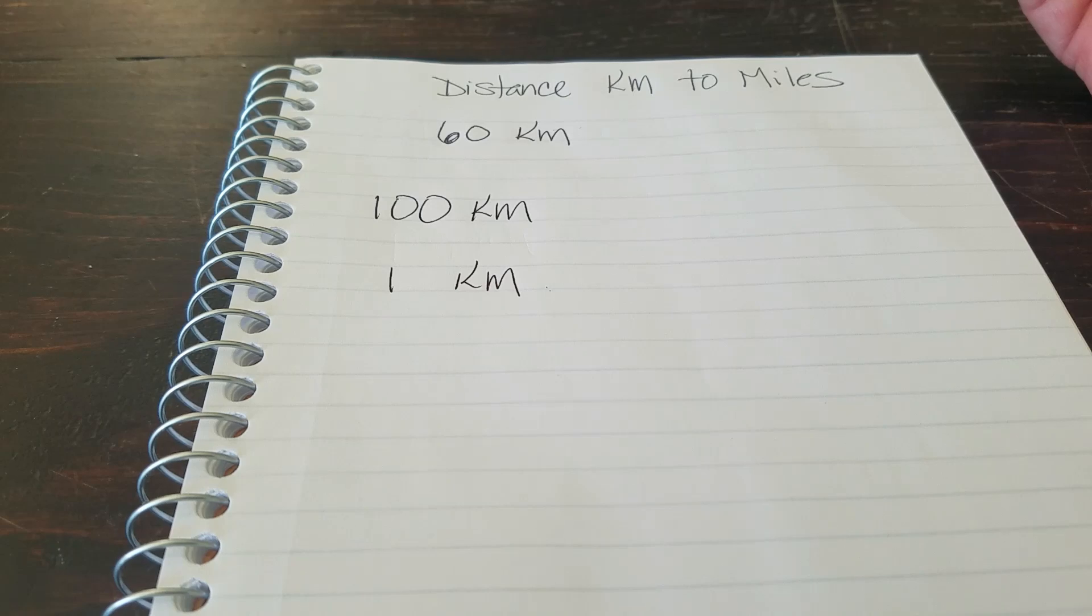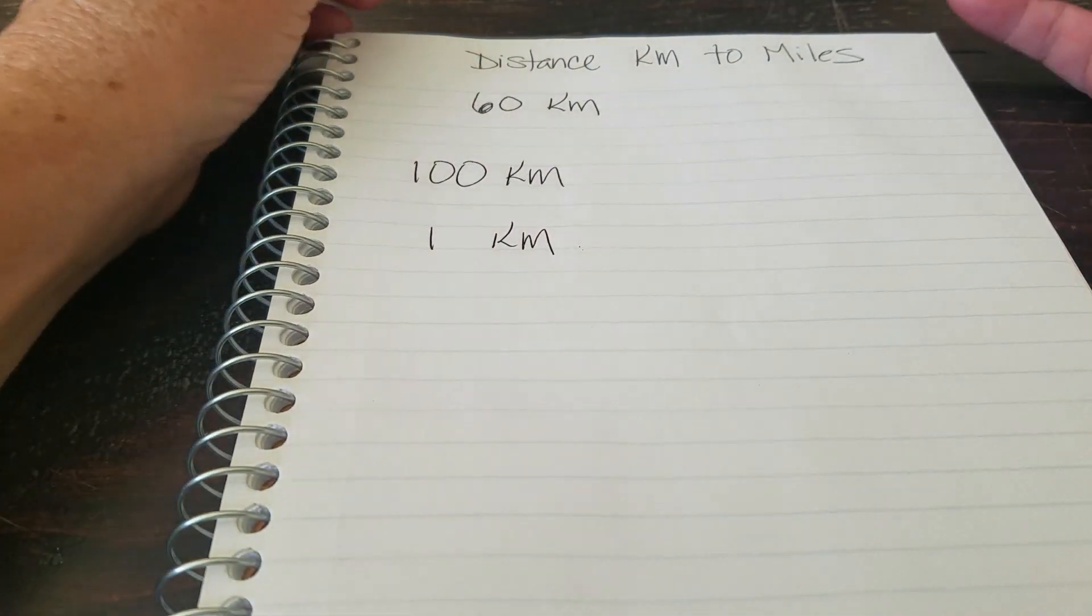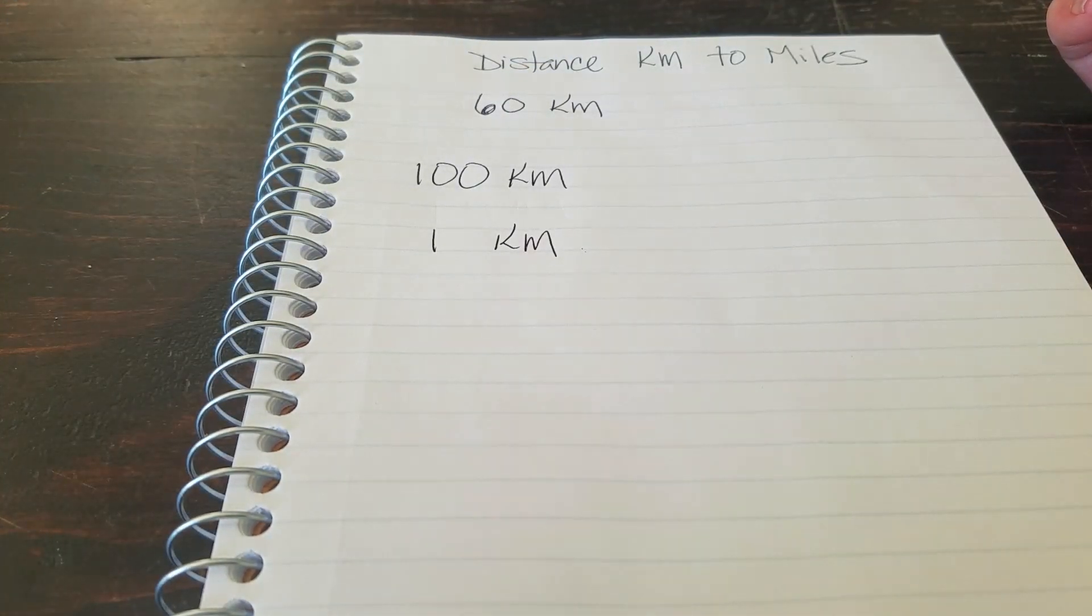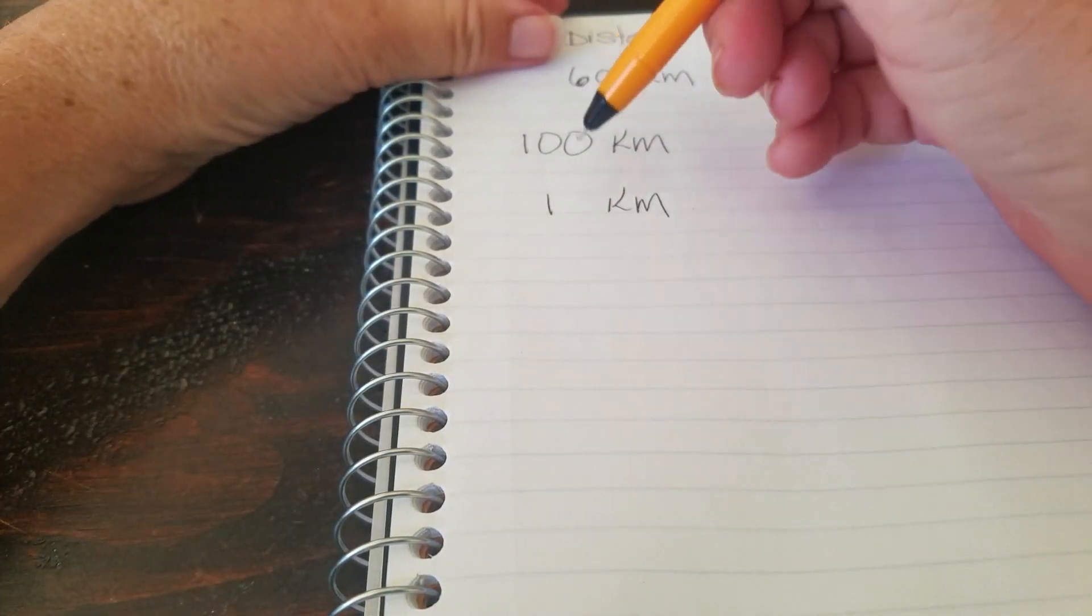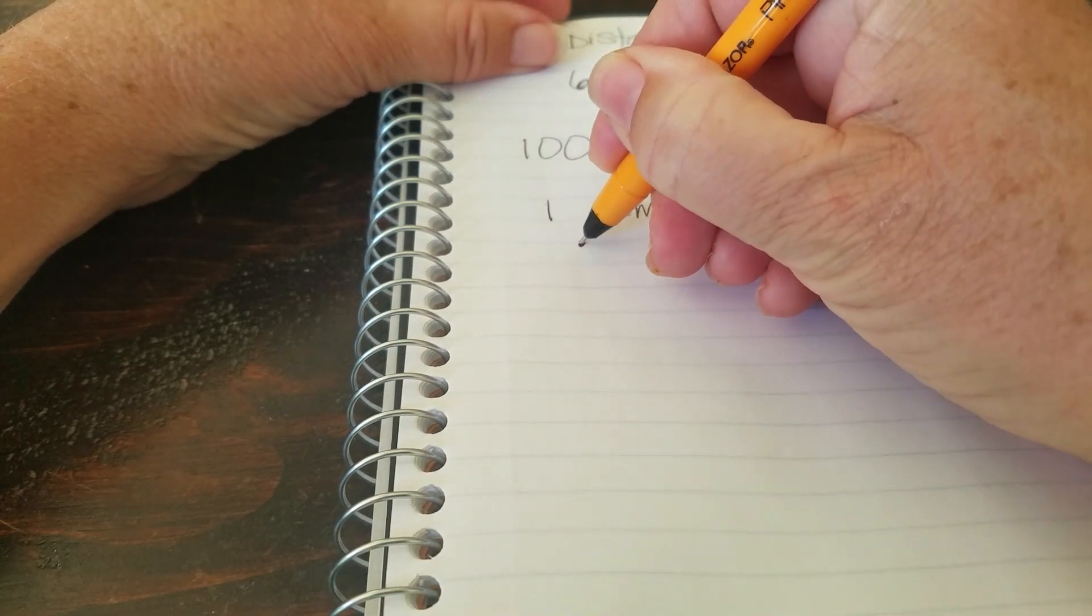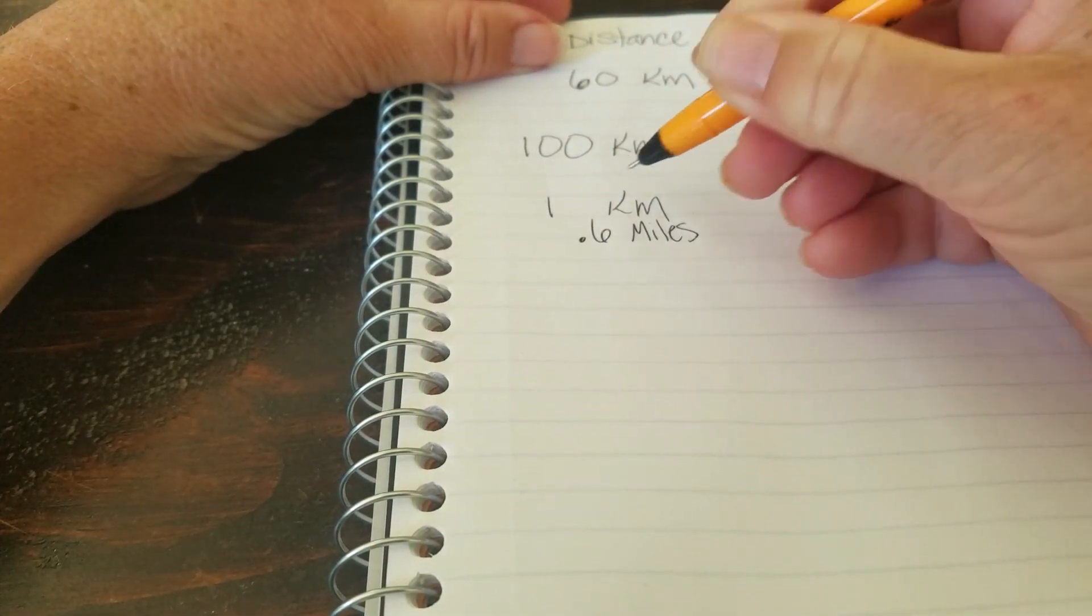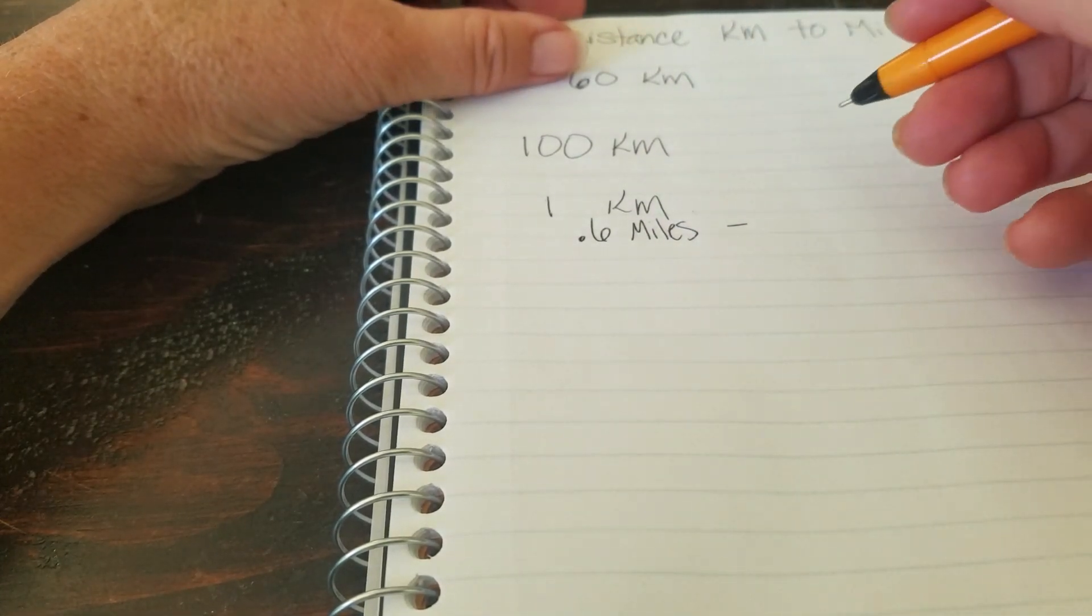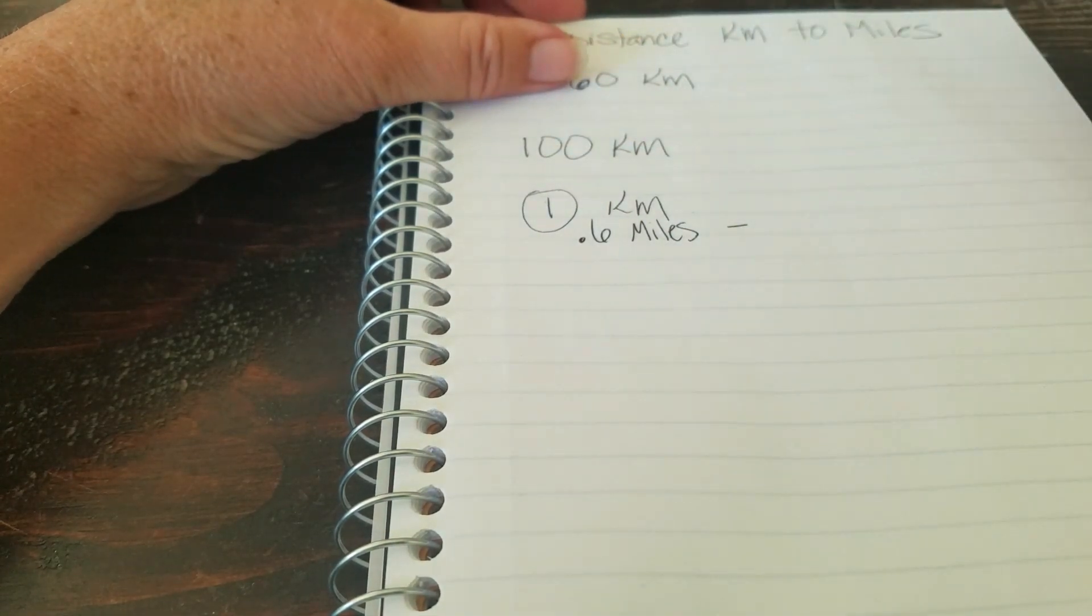I'm going to teach you a way to do this without a calculator. It does take a little practice, but the results are usually pretty spot-on, give or take a tenth of a mile or something. We know that one kilometer is 0.6 miles, so it's just more than half.